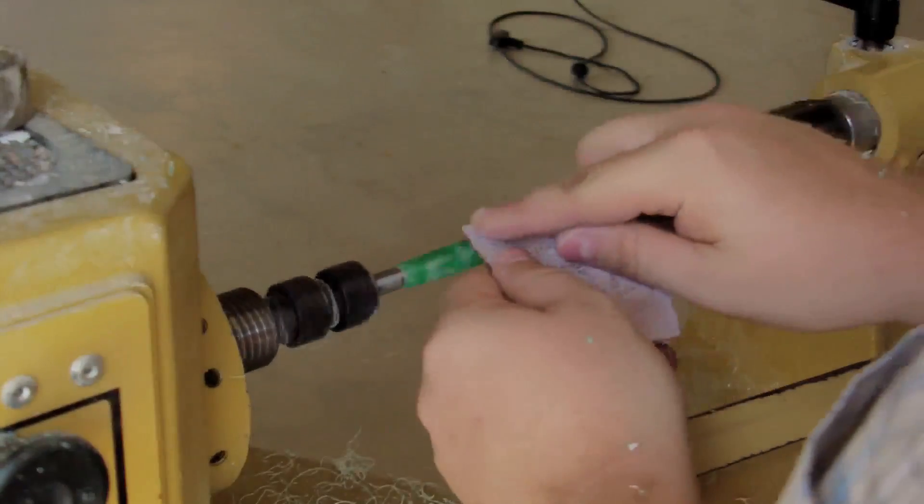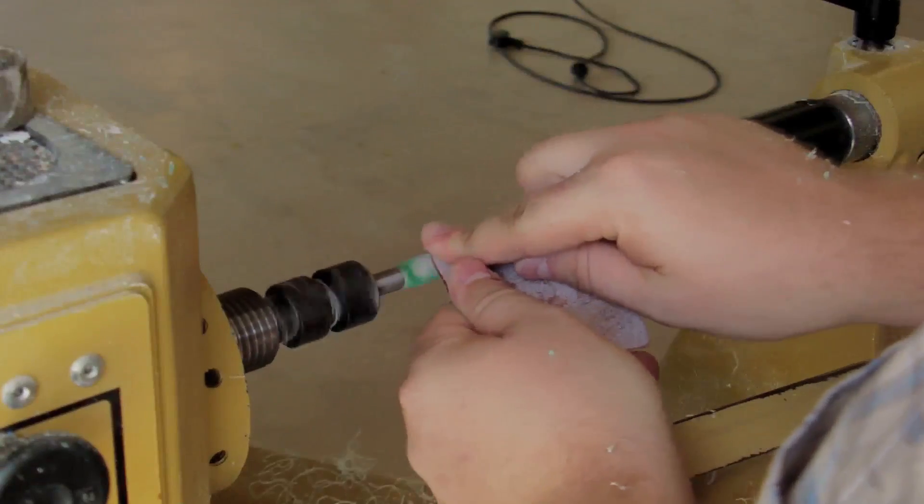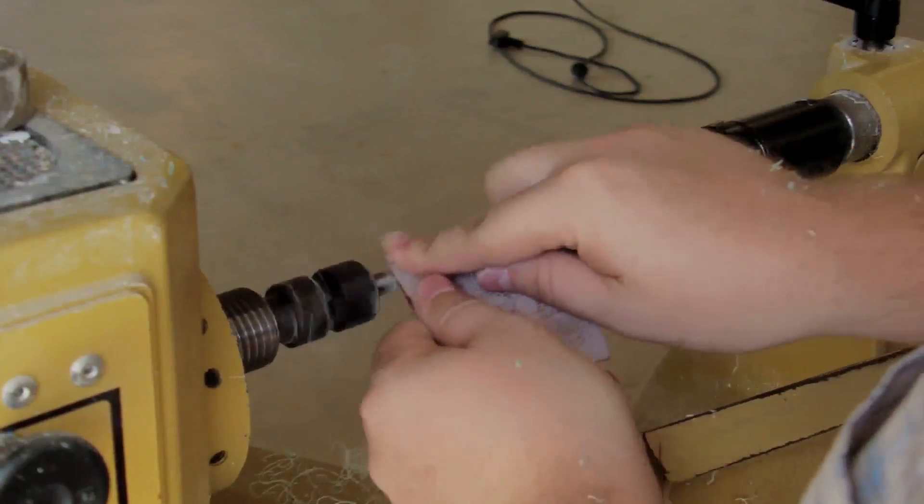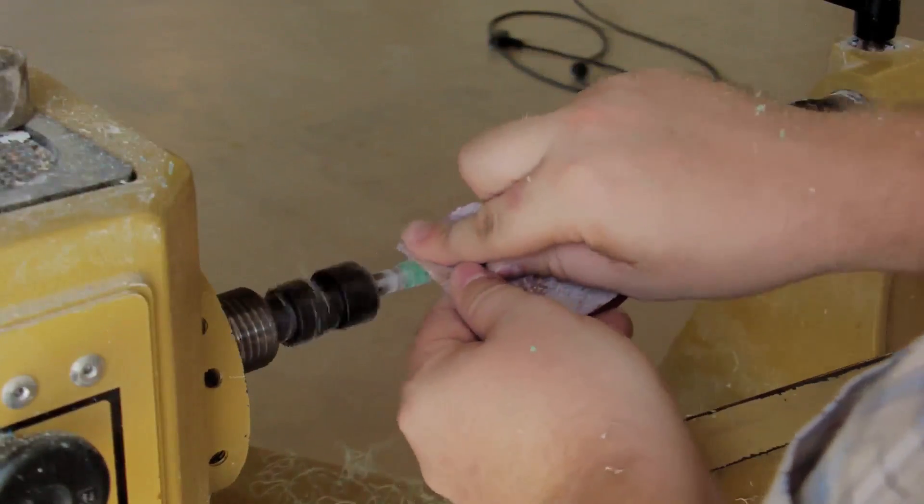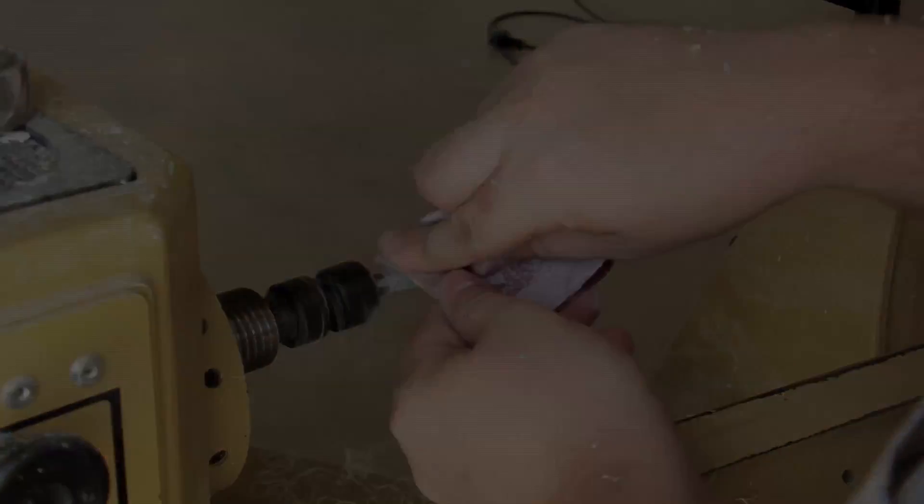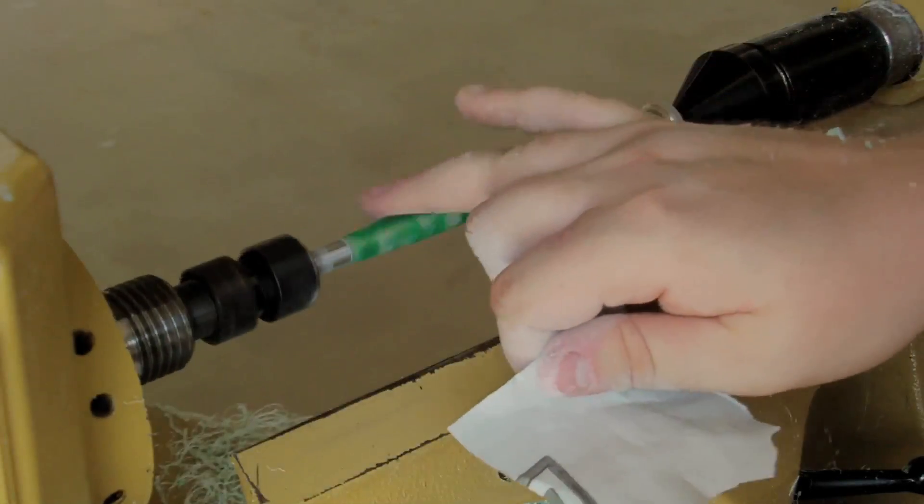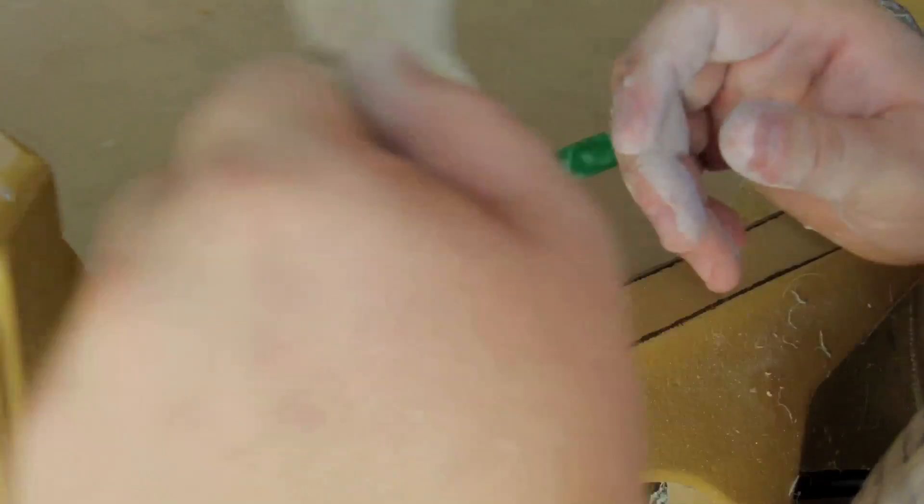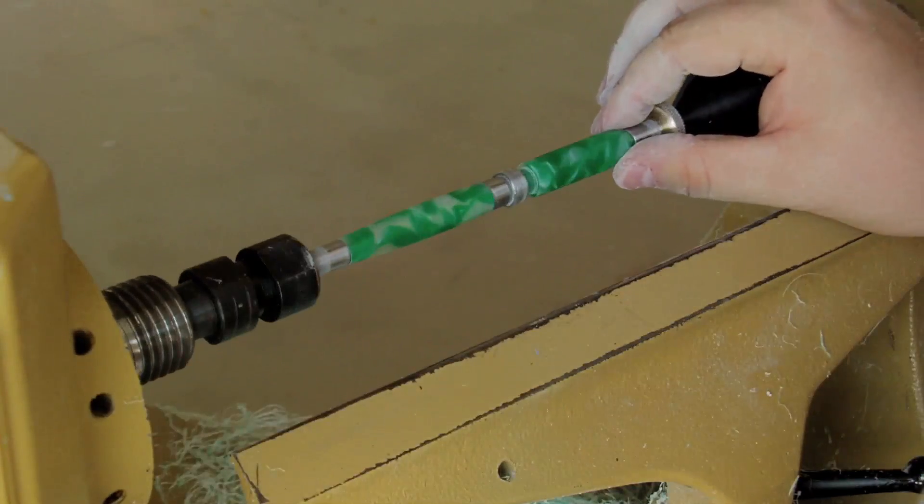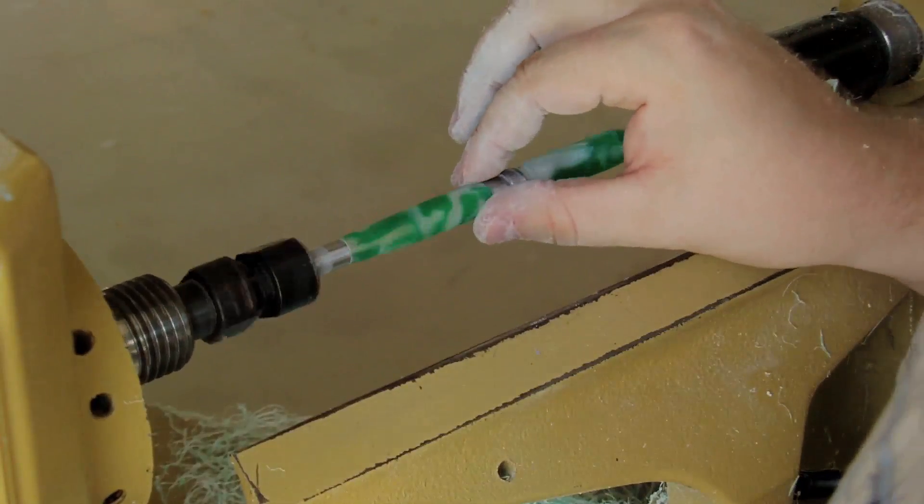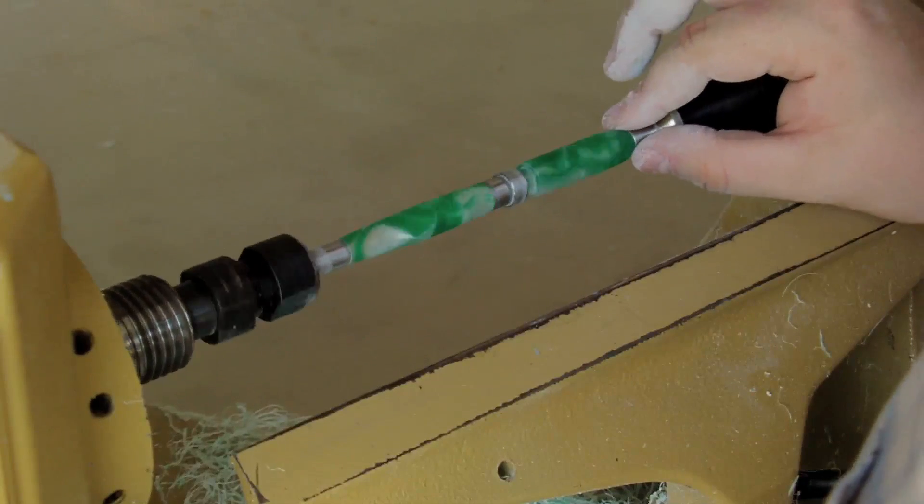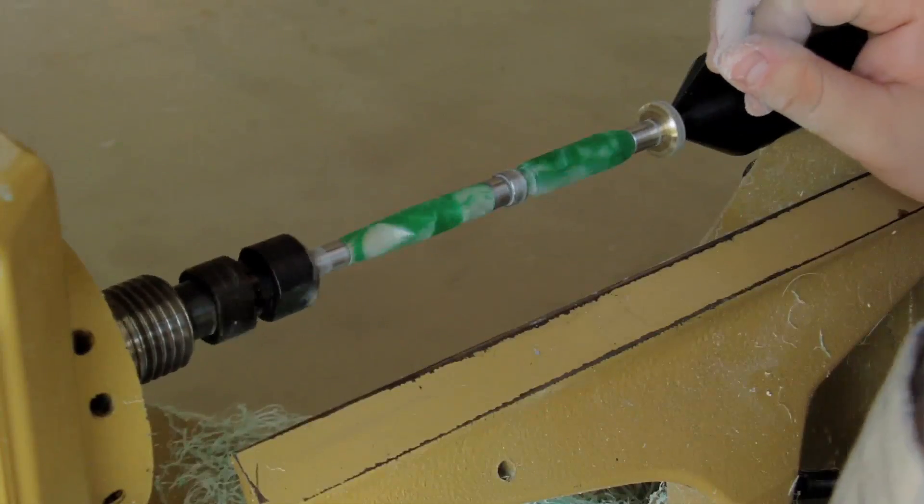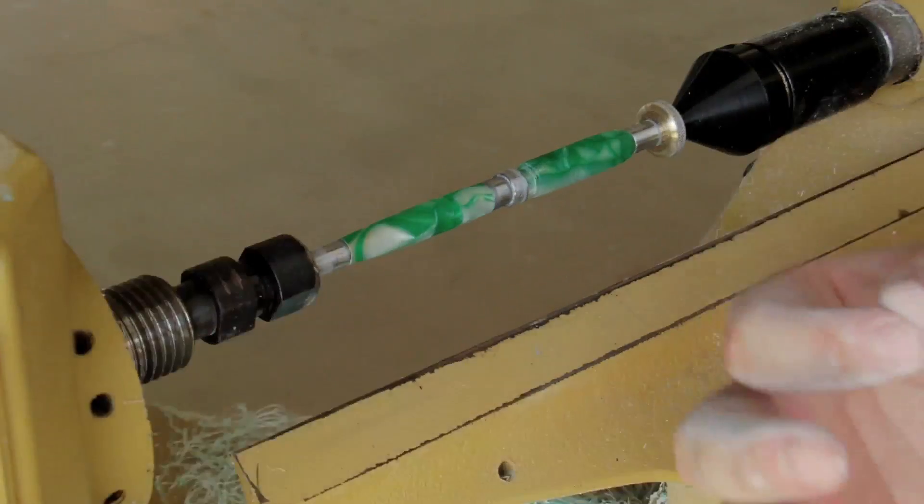Basically what we're doing here is we're just going to go through and just kind of sand this down so we get our nice smooth edges that we want and kind of help shape it a little bit too. So now that we went over with the 800 we just want to look through it real quick, make sure there's no major scratches anywhere. It looks pretty darn good. So at this point here we're actually going to start polishing it.